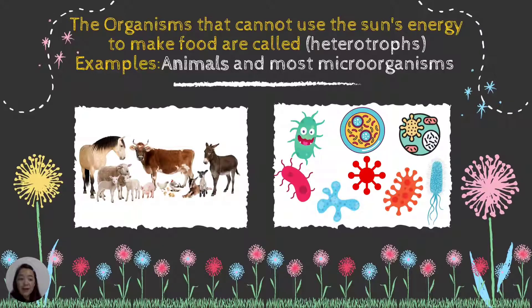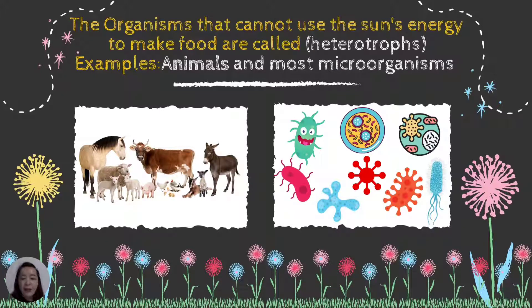Heterotrophs cannot produce their own food. Examples are animals and most microorganisms. Human beings are also heterotrophs.